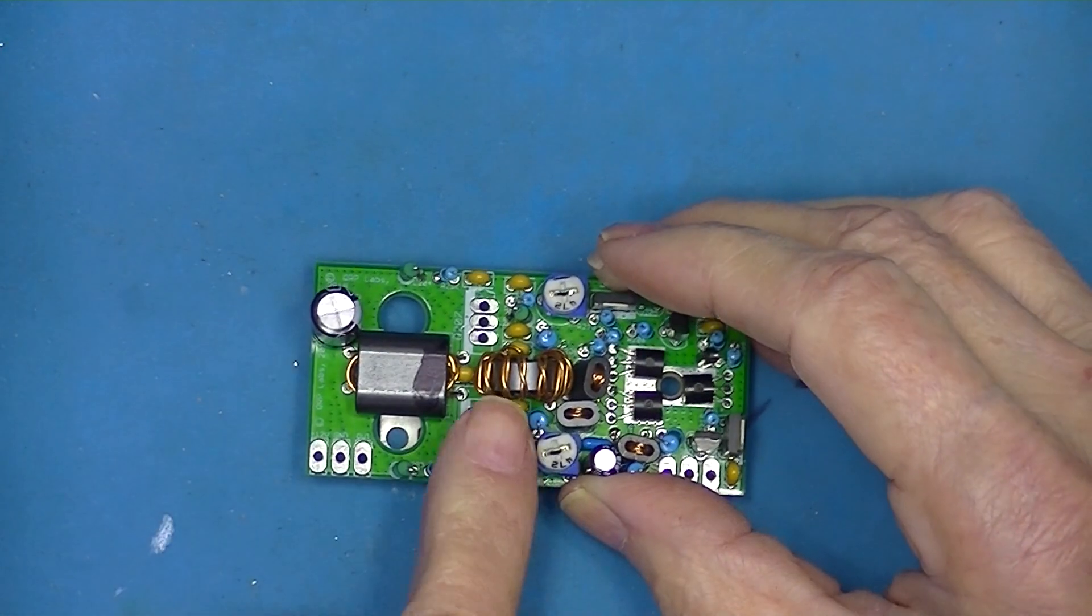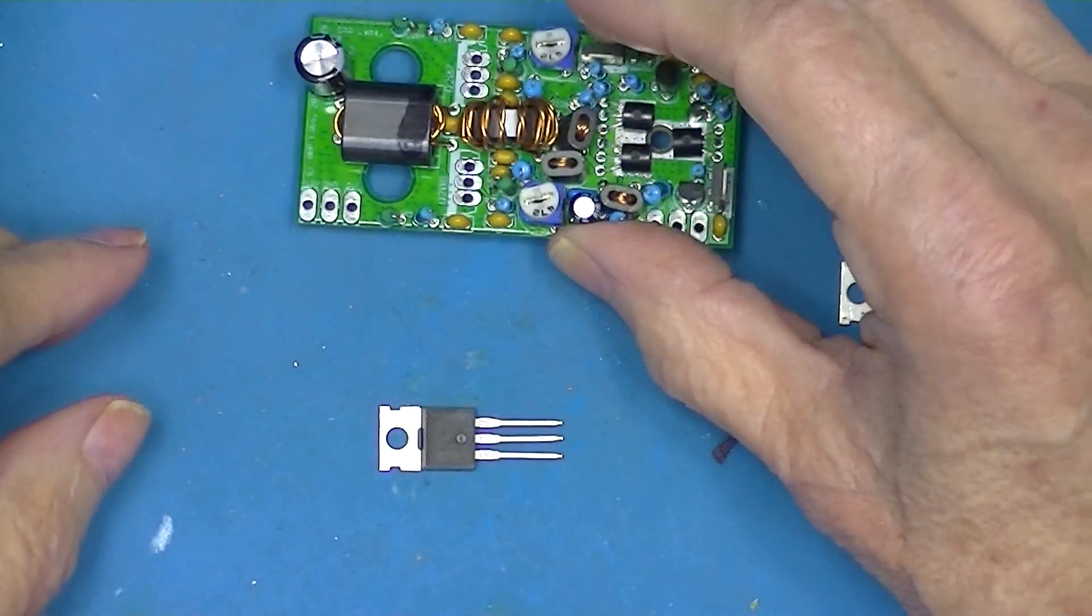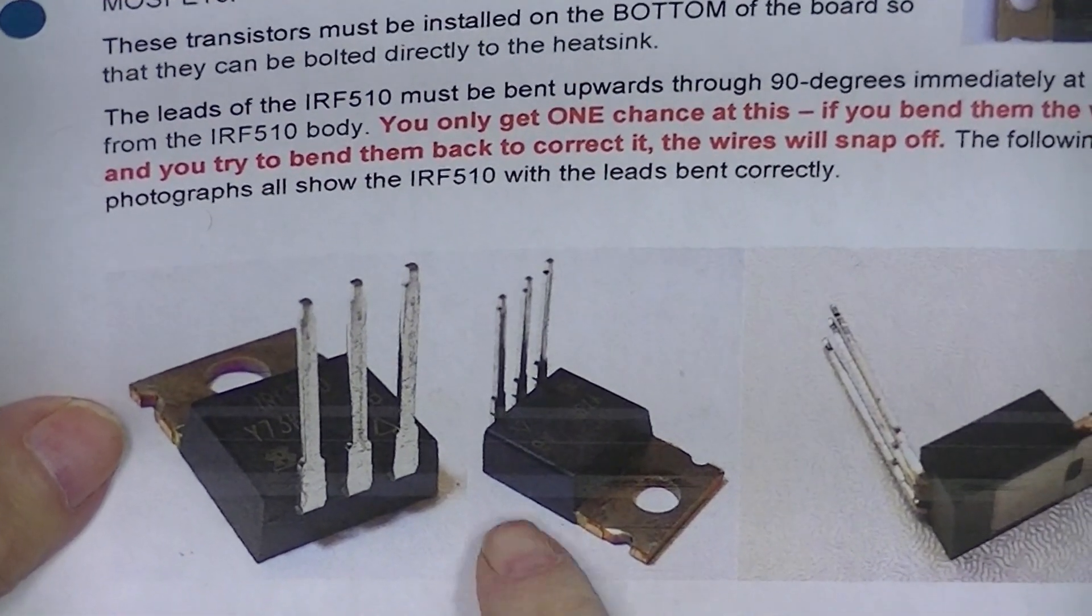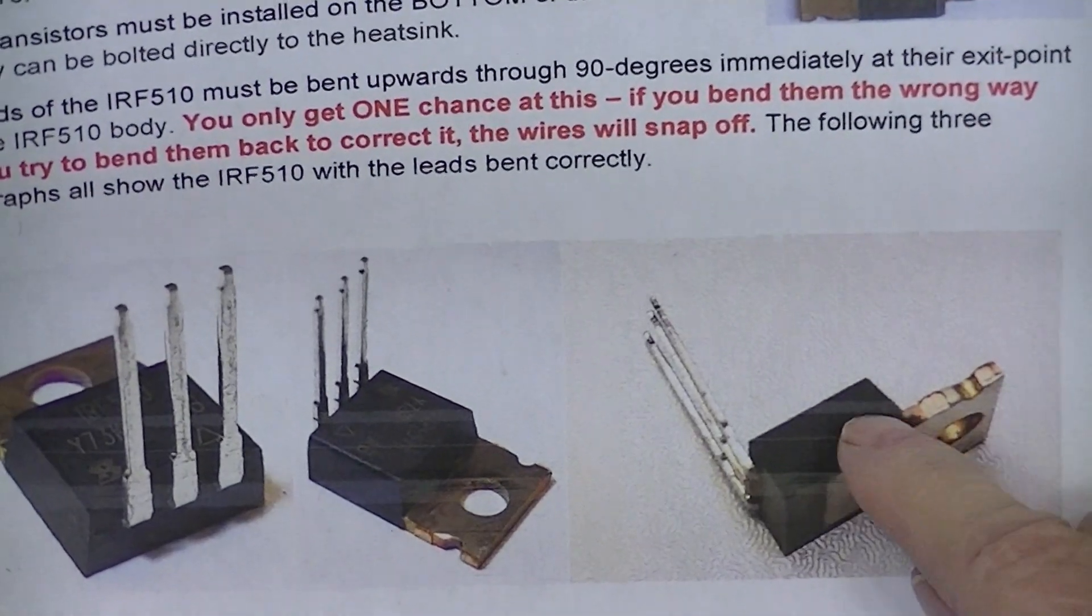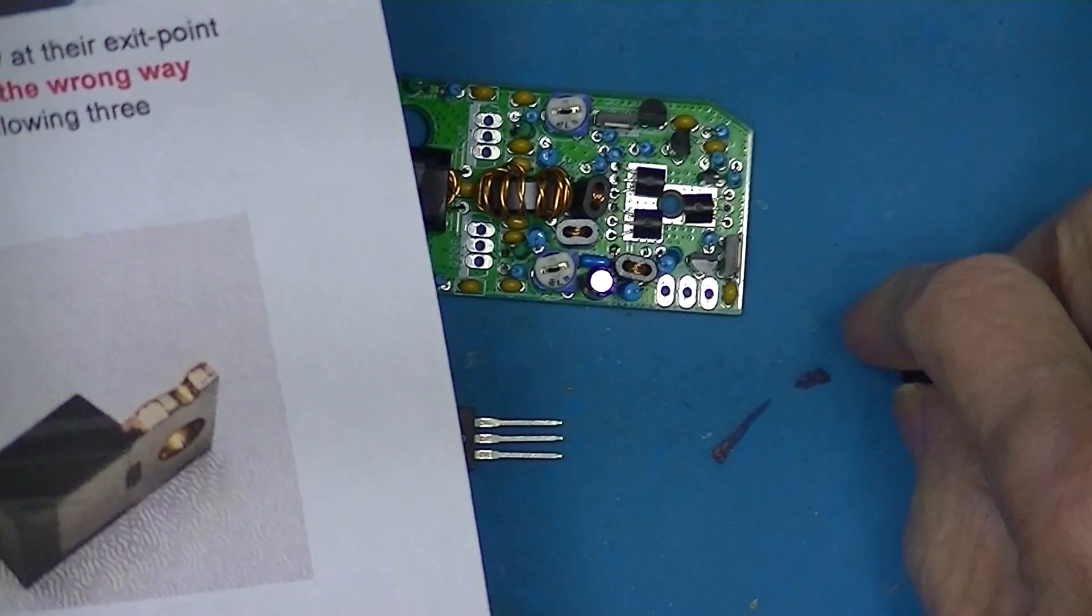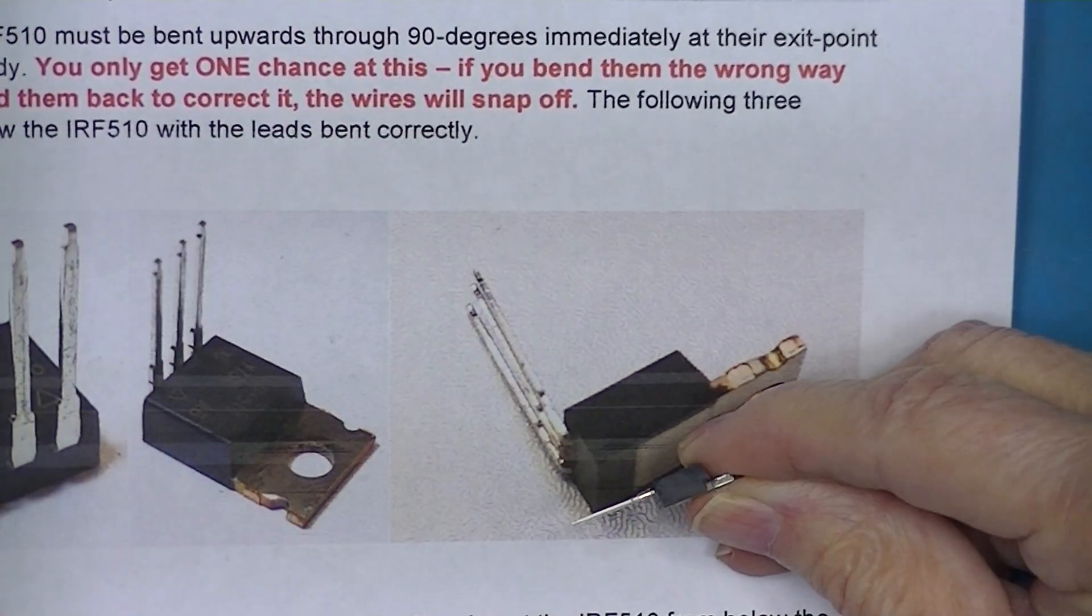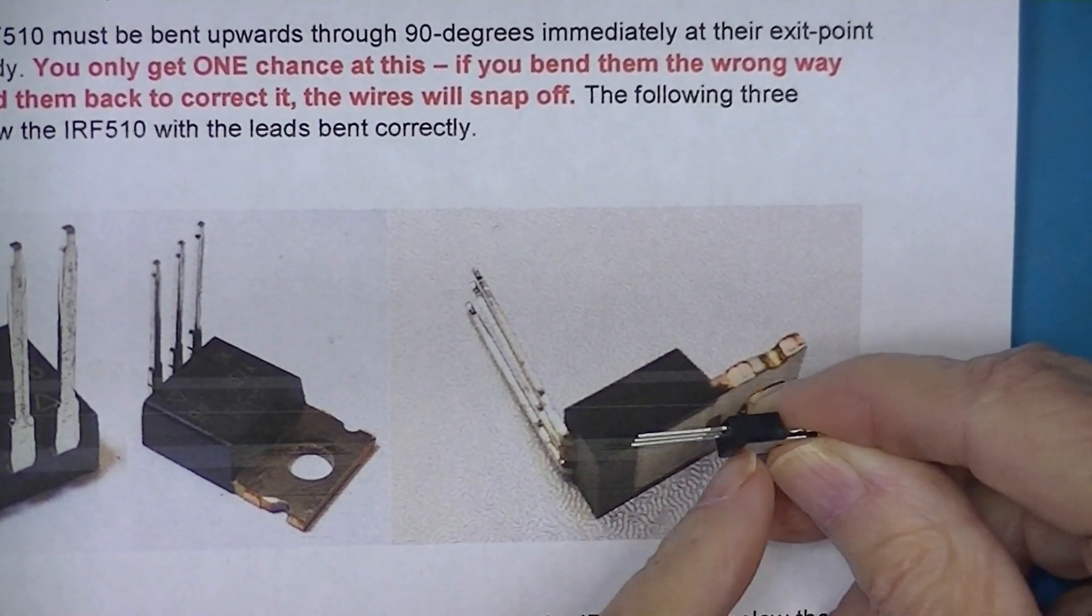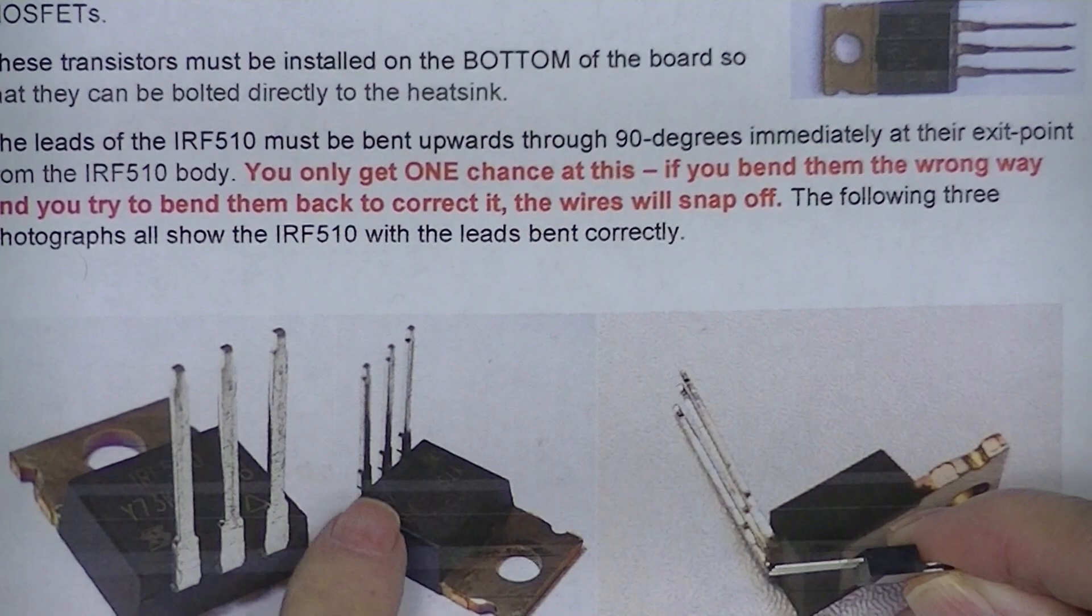The legs are to be bent upward and enter the board from below. QRP Labs gives some very explicit instructions for this. So the legs are to be bent upward and they are to be bent tightly against the bottom of the body of the transistor. And you get only one chance.